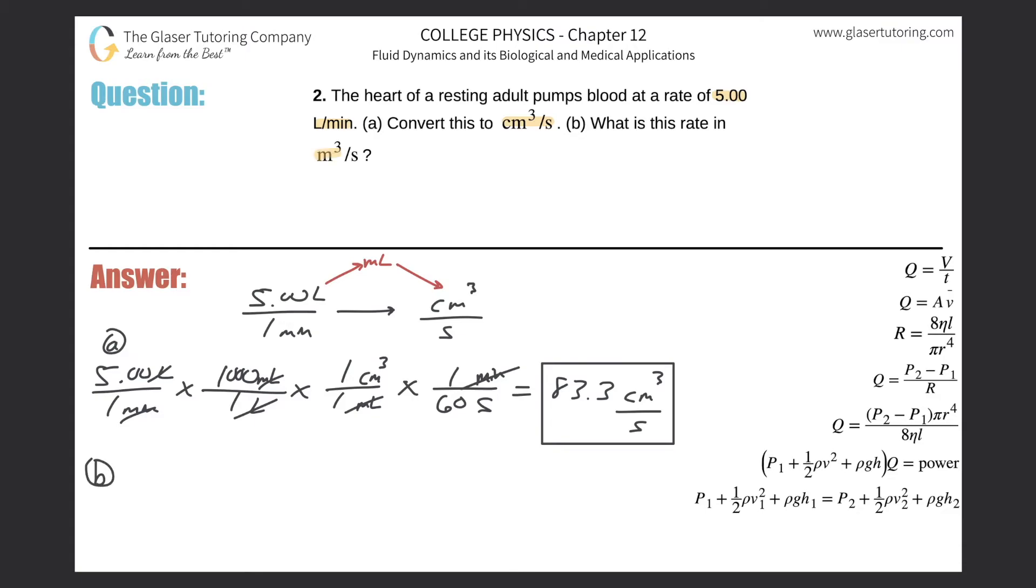Start with what we got: 83.3 cubic centimeters per one second. All I got to do is convert now to cubic meters. Centimeter on the bottom, meter on the top. We know that there's 100 centimeters in one meter.